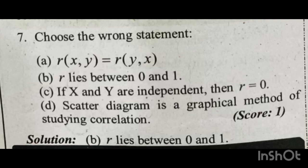There are two independent variables — they don't depend on the same thing. In that case, there is no correlation. There is no existence of correlation between two independent variables — that is a right statement. And scatter diagram is a graphical method of studying correlation — that is also a right statement.